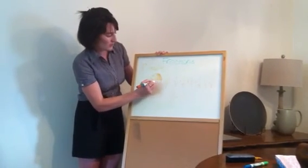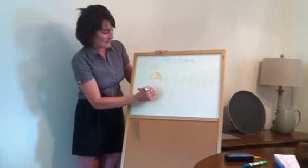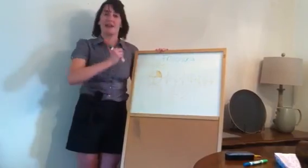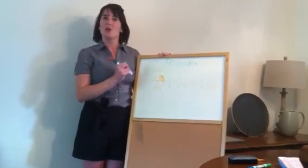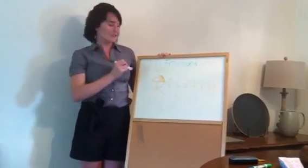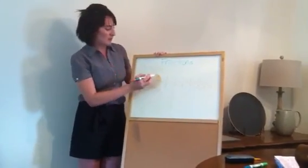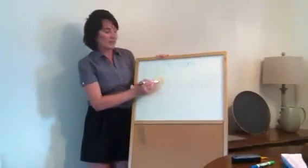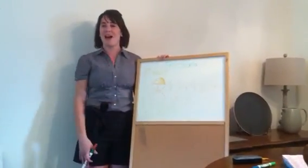Two pies for eight adults, because they're all going to be eating a fourth of a pie. One, two, three, four, five, six, seven, eight adults. One, two, three, four, five, six, seven, eight slices per pie. Two pies total.